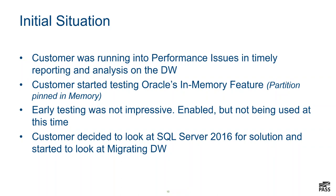They were starting to get some issues with scaling. Some of their queries and analytics were taking a pretty long time to execute. So they contacted Oracle, because it's an Oracle data warehouse. Oracle said they have a new feature called their in-memory feature — essentially, it's as if you took a partitioned table and pinned one of those partitions into memory, which is the partition that gets all the new data coming in. It sounded like it should solve a lot of problems, but in this case it didn't. Actually, performance was decreased when they turned it on, so they turned it off.